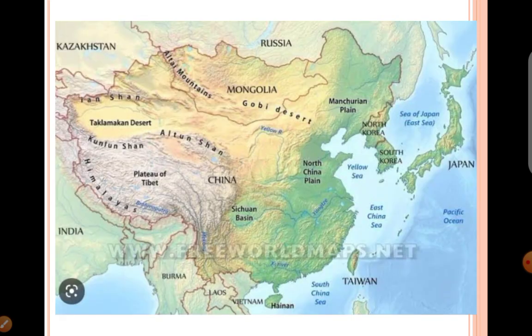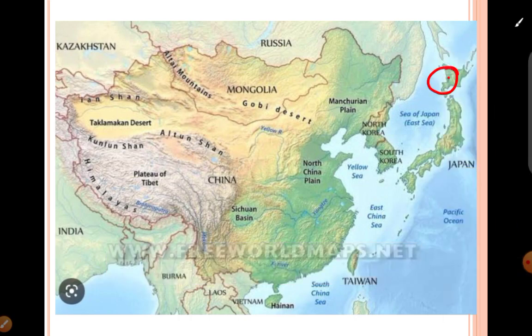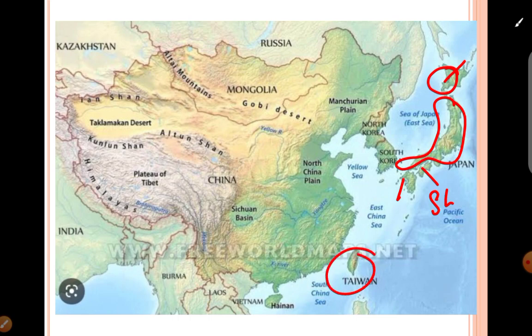The third physiographic division of East Asia is the island arcs. In the island arcs, there are 5 main islands of East Asia. One is Taiwan. Another is Japan, which includes 4 islands: the most northernmost is Hokkaido island, then Honshu island, then Shikoku, and Kyushu island. These are the Japanese islands and Taiwan island, all forming the island arcs of East Asia.